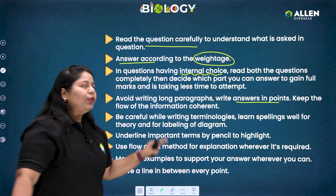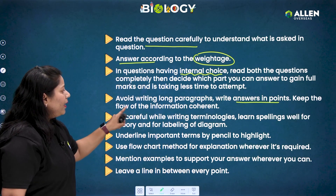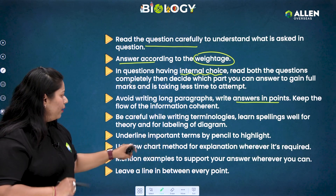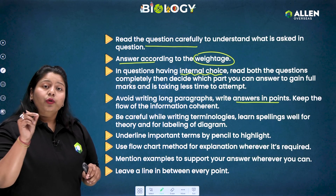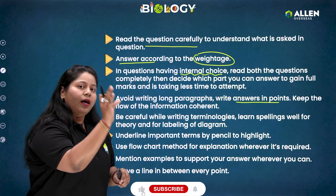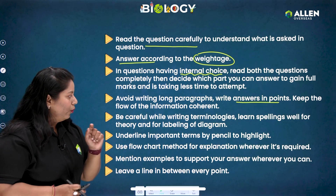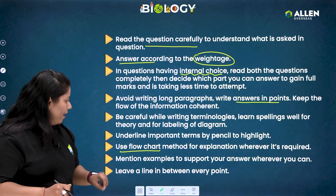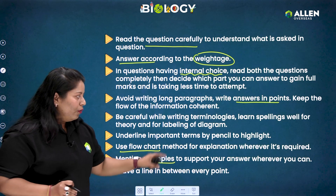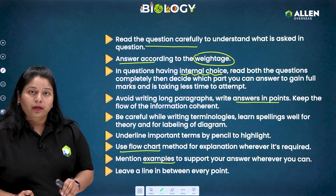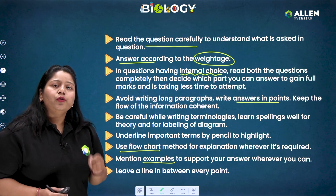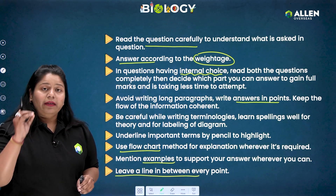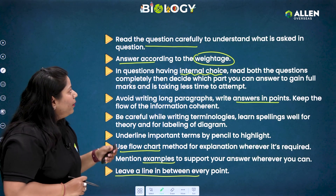Being a theoretical subject, it's very important to write answers in points and keep the information coherent. Be careful while writing terminologies — learn spellings well for theory and for labeling of diagrams. Underline the important terms by pencil to highlight them so the examiner will know the student answered correctly. Use flowcharts for explanation wherever required, and mention examples to support your answers — for instance, if they ask about food web or food chain, give an example.